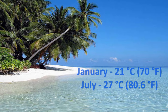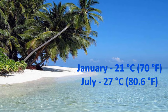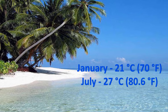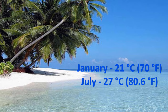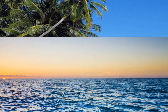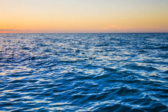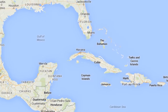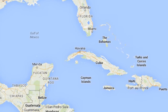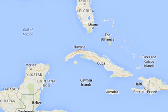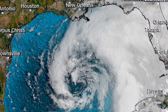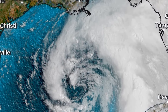Cuba's climate is tropical, with dry and relatively cool weather from late November to April, and rainy and muggy weather from May to October. Average temperature is about 21 degrees in the cooler months and 27 degrees in the warmer months. The warm waters of the Caribbean Sea and the location of Cuba make Cuba a target for frequent hurricanes, mostly between September and October.